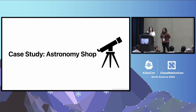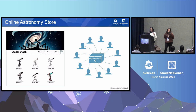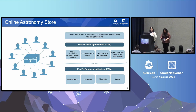We'll start by setting up some context for our case study. Imagine you're creating your very first online service, which is an astronomy shop — Stellar Stash. It's full of fancy gadgets like telescopes and binoculars, and we're offering a flat discount. As a service owner, you want to make sure your customers are loyal, grow your business, and ensure your users have a stellar experience. This is an online service, so you want to ensure high availability, reliability, and good user experience.